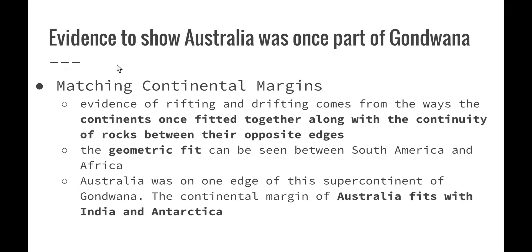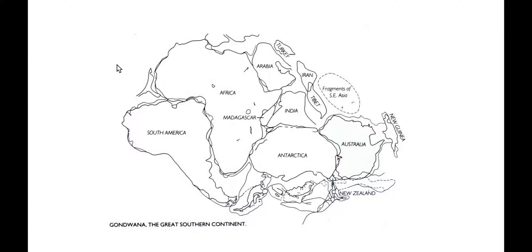The first piece of evidence from the syllabus is the matching of continental margins. Evidence of rifting and drifting comes from the ways the continents once fitted together and the continuity of rocks between their opposite edges. The geometric fit can be seen between South America and Africa — the pieces fit together almost like a jigsaw puzzle. Australia was on one edge of Gondwana and its continental margin fits with India and Antarctica. Over time, through erosion and rising sea levels, those edges have since changed.